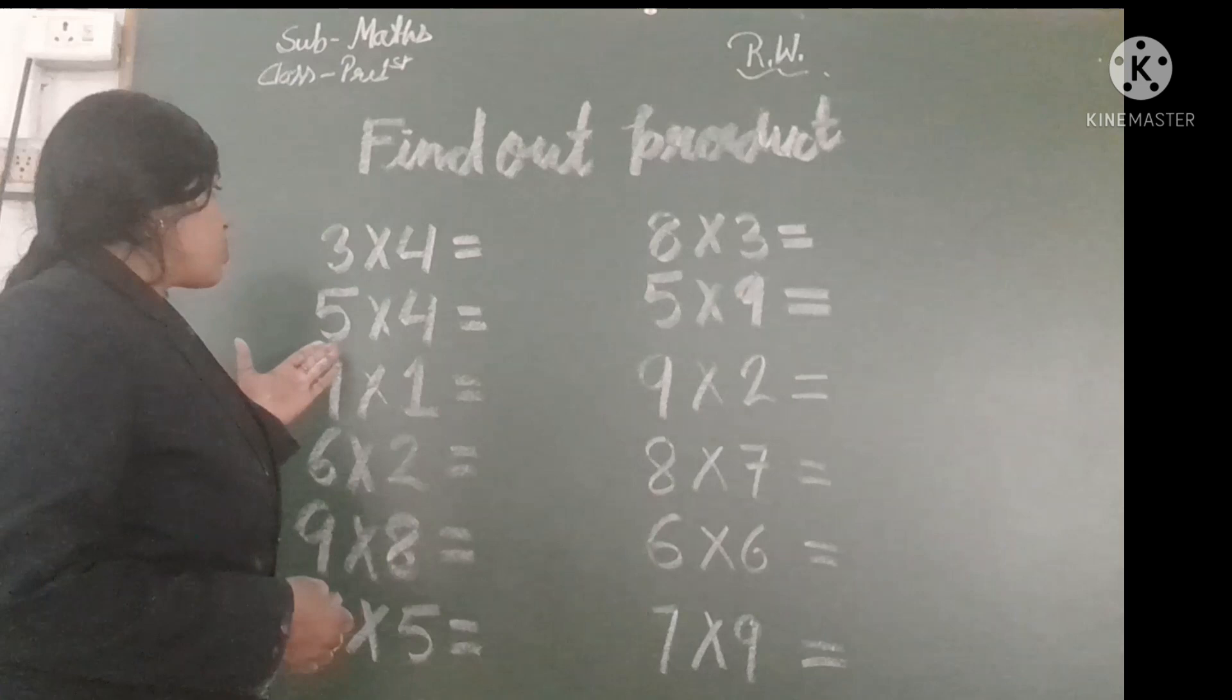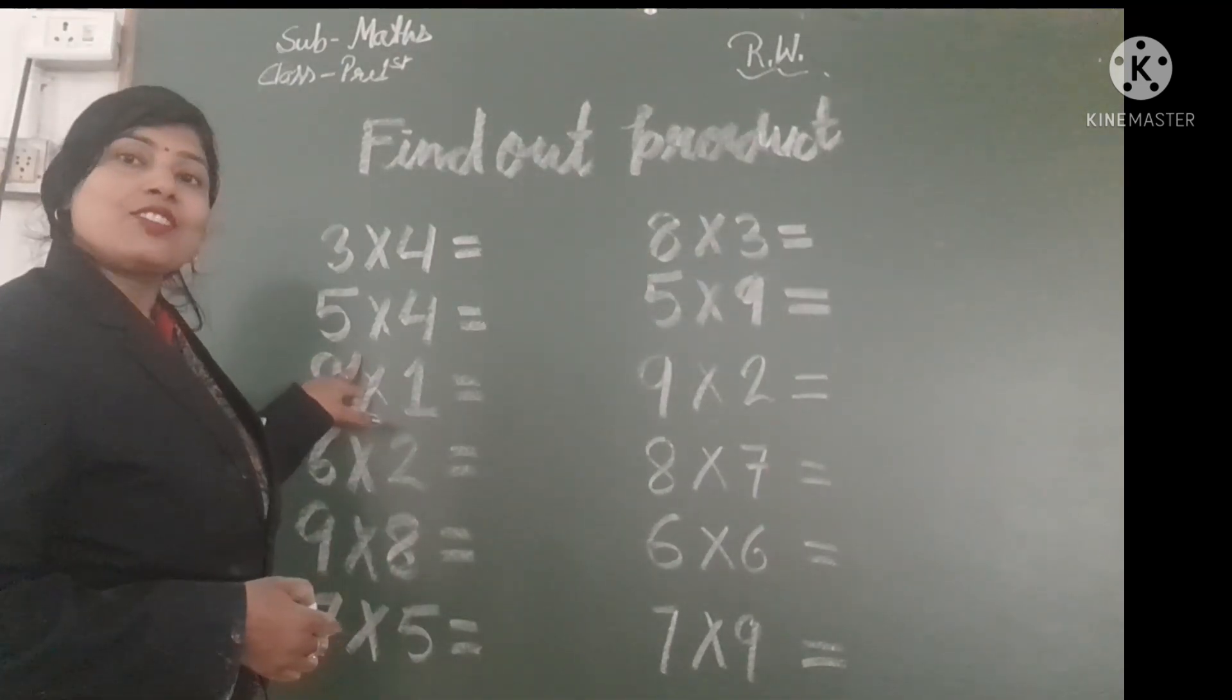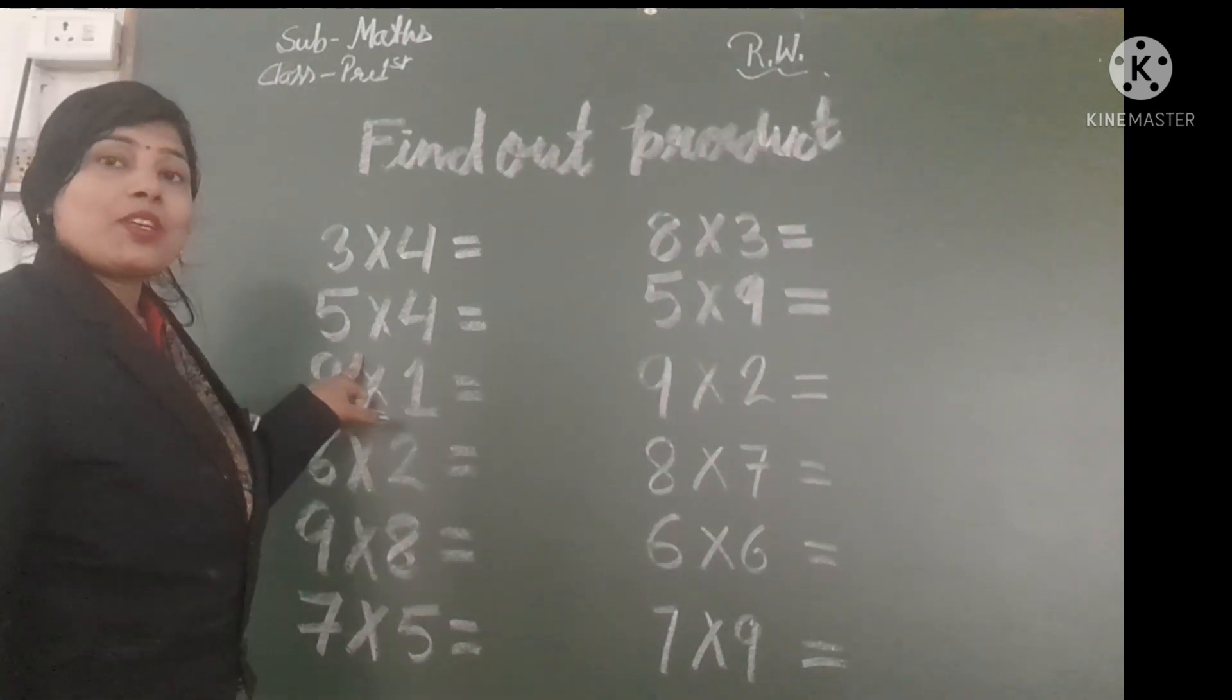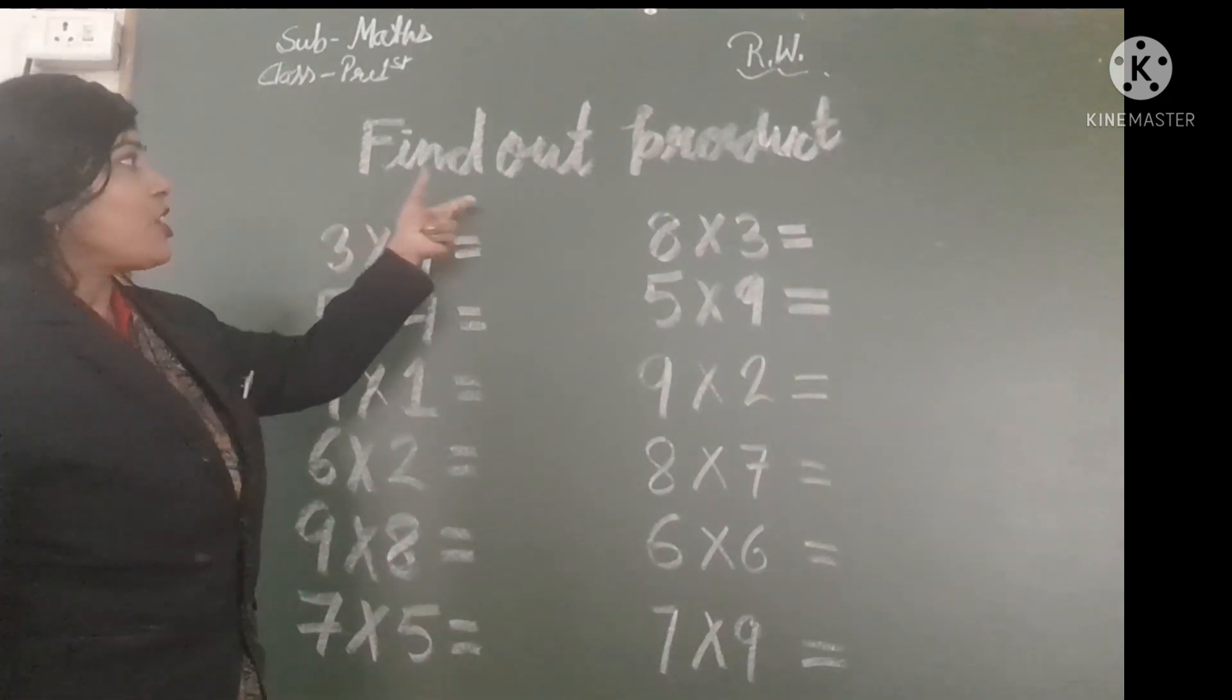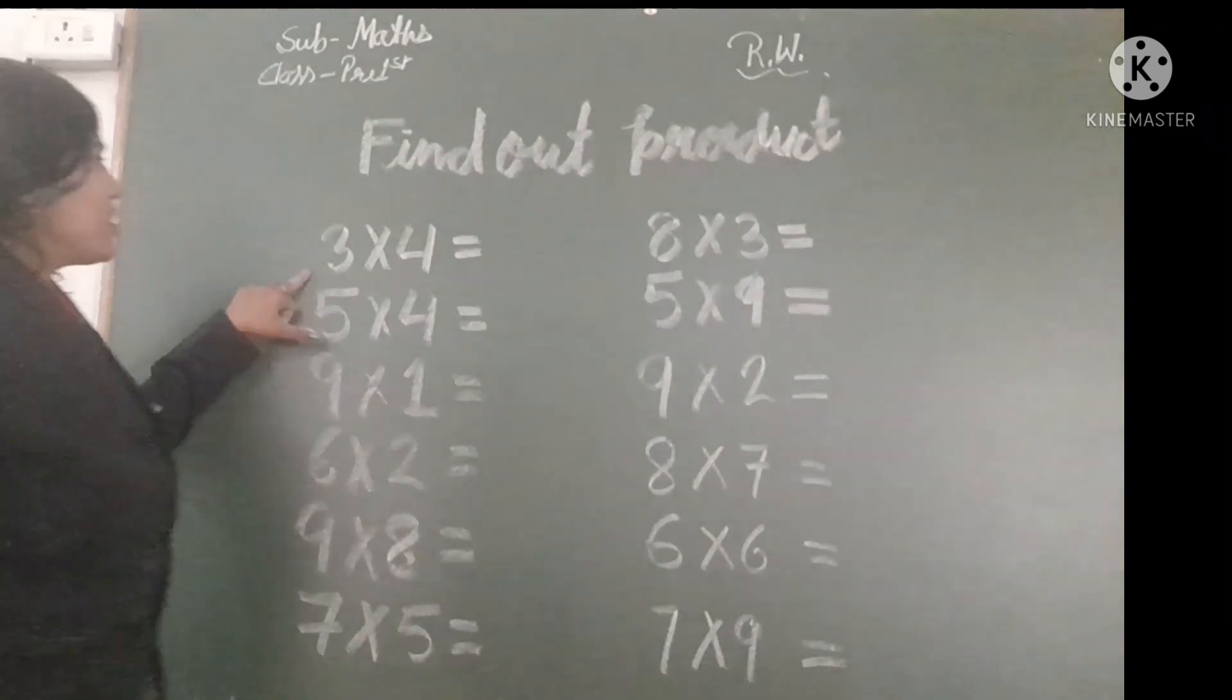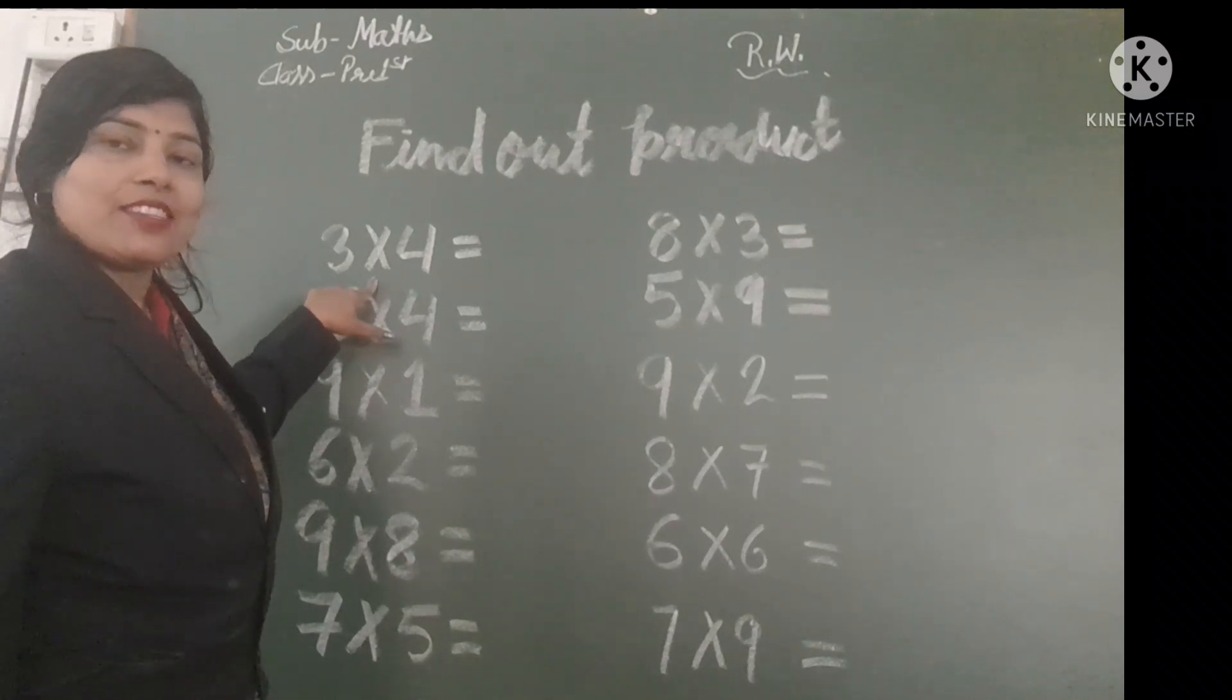There are given which sign. Recognize this sign and solve the equation. So, its name is find out product. Look at all of you. It is sign of multiply. So,